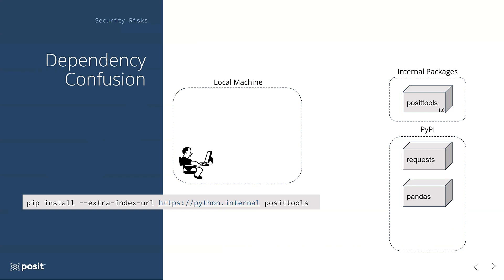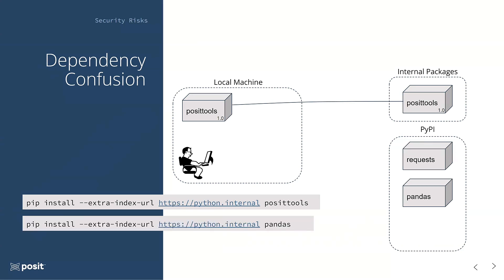So pip goes out, looks for the Posit tools package on PyPI, doesn't find it, realizes it's not there, so it's probably an internal package, and then searches the extra index URL, finds it on our internal repository, and installs it. I also need Pandas, so I do the same command — this time it does find Pandas on PyPI and installs it just as expected. So everything's perfect until our malicious actor steps in.